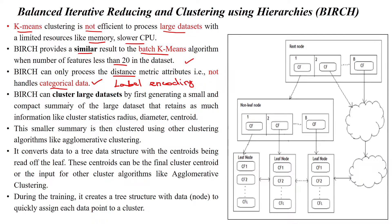BIRCH can cluster large datasets first by generating a small and compact summary of the large dataset. That means the summary will have information regarding that particular data point in the form of radius, diameter, and centroid. This smaller summary is then clustered using other clustering algorithms like hierarchical clustering algorithms.